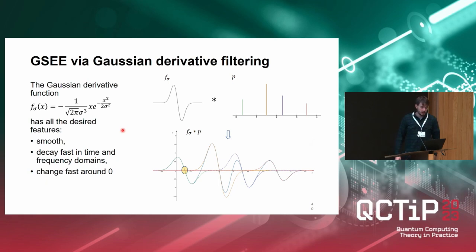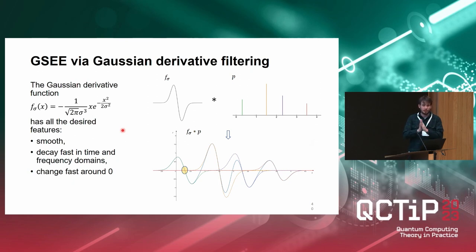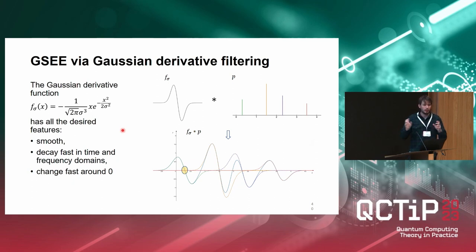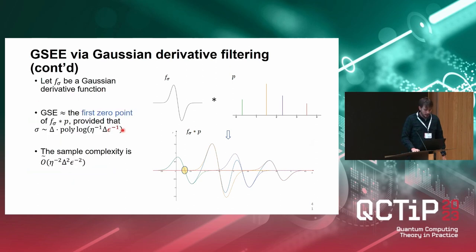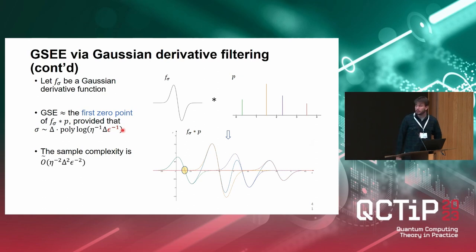What we do instead is evaluate the convolution of the spectral measure with the derivative of a Gaussian function. The peaks become zeros of this convolution, and since the derivative decays faster around its zeros, you can identify the ground state location with smaller precision. If you evaluate things with the derivative of the Gaussian, you get the result claimed before.